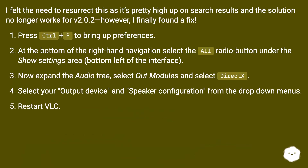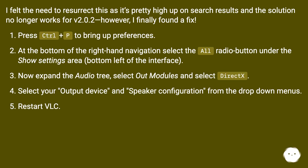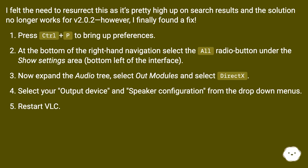However, I finally found a fix. Press CTRL+P to bring up preferences. At the bottom of the right-hand navigation, select the All radio button under the Show Settings area, bottom left of the interface. Now expand the audio tree, select Out Modules and select DirectX. Select your output device and speaker configuration from the drop-down menus. Restart VLC.